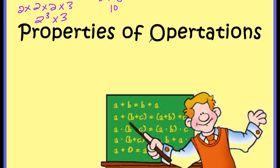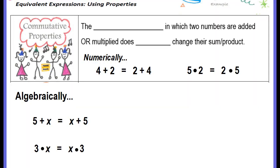We're going to continue with properties of operations. A property is a rule — a mathematical rule where they've done something over and over again and every time get the same result, so they've said, this is a math rule, this is something we can do. It becomes a property. It's going to be ways for us to write expressions differently so that they're still equivalent. So your notes should be out — make sure you're filling them out as we go along.